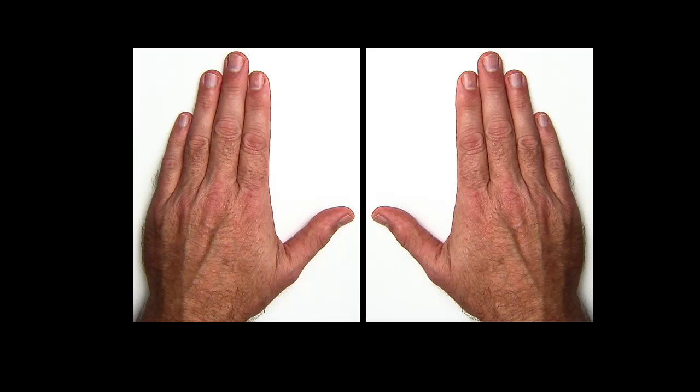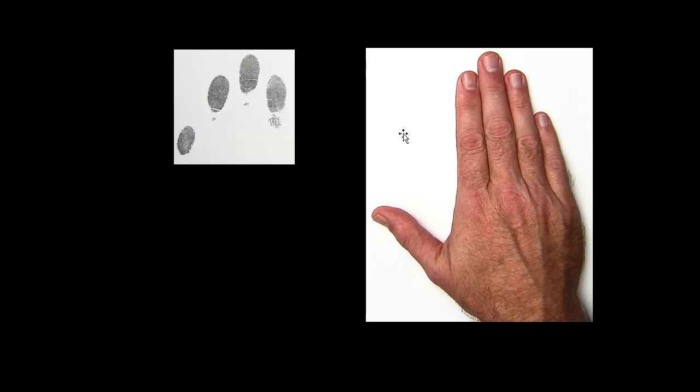We will use the ulnar and radial descriptions to recognize the ridge flow of loops. I have inked my fingerprints and placed them flat on the paper so that we can try to interpret if I have radial loops, ulnar loops, or possibly both types of loops. Now let me slide the hands away to reveal the fingerprints.